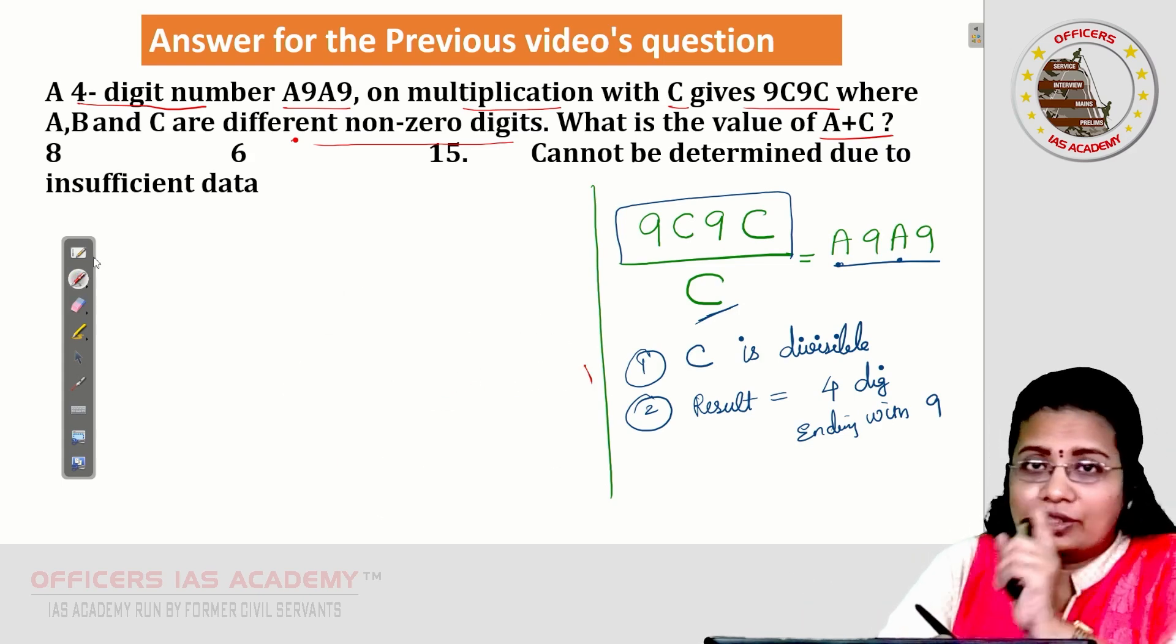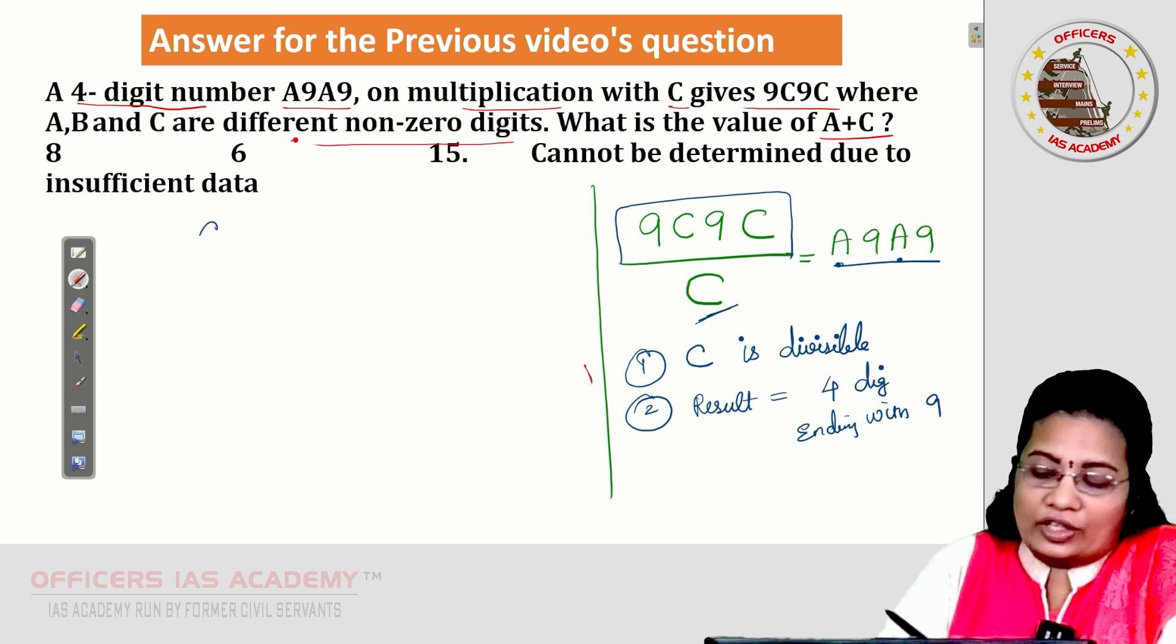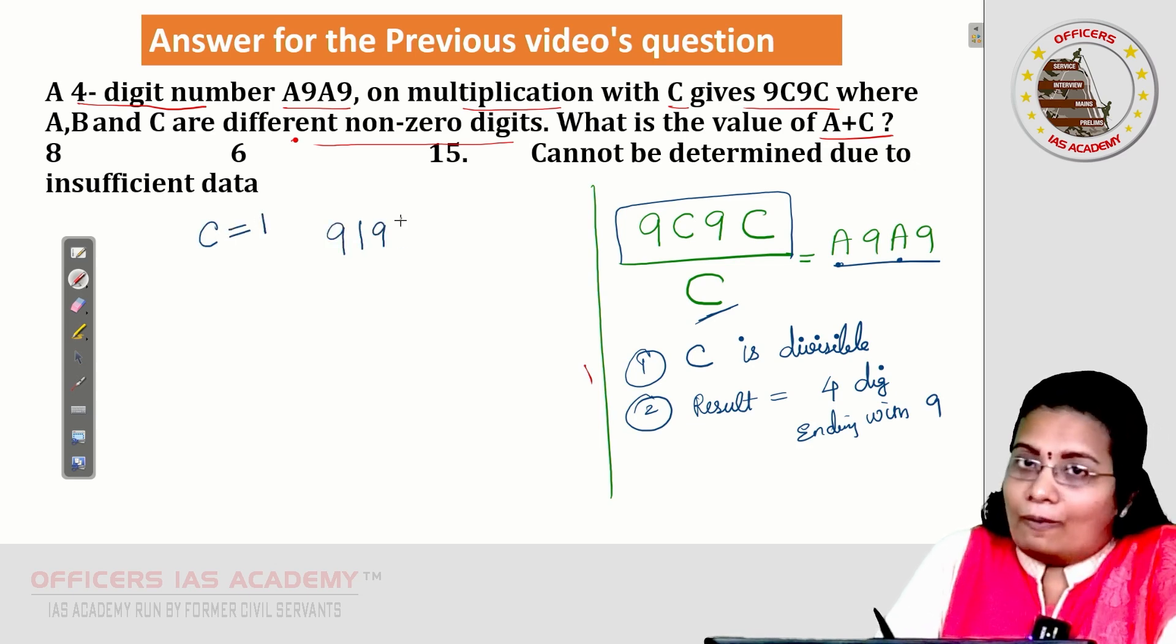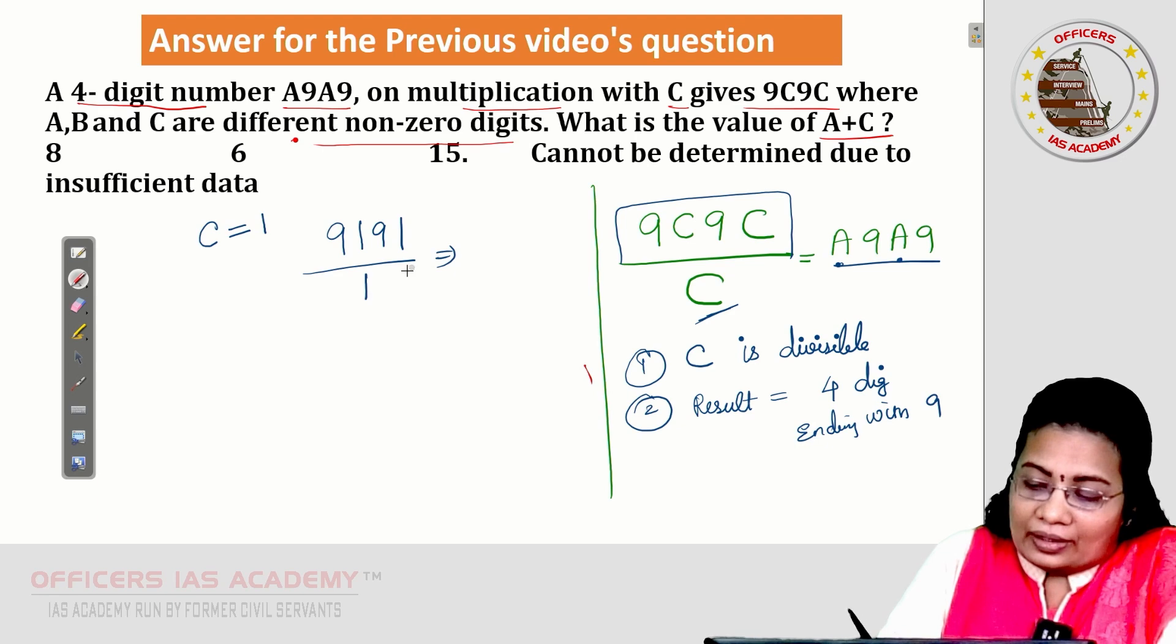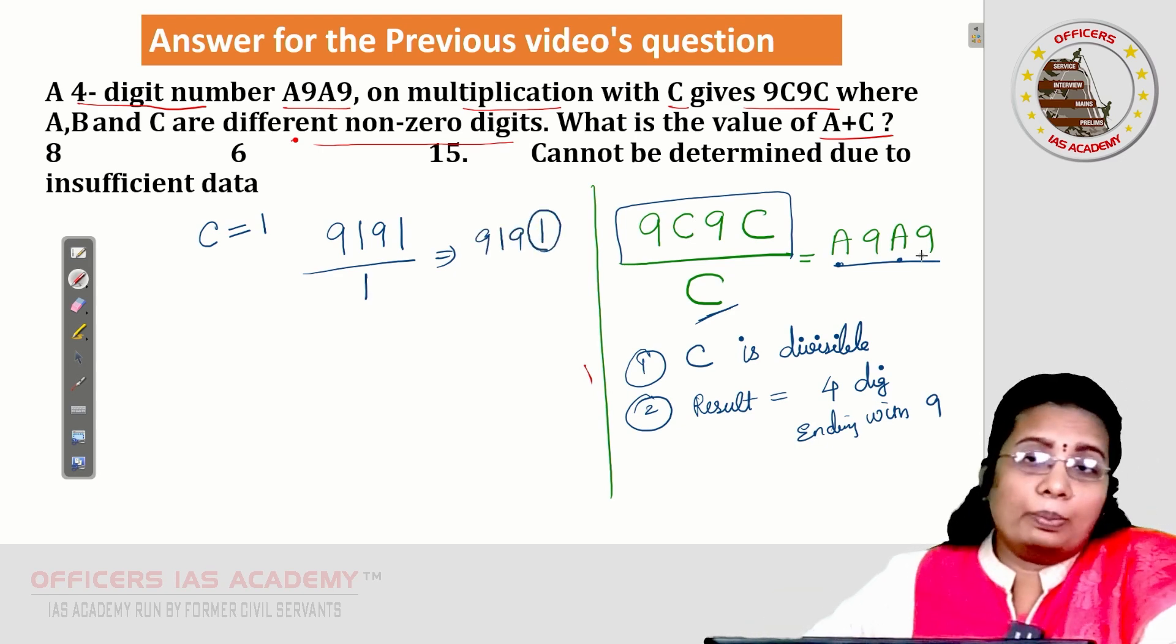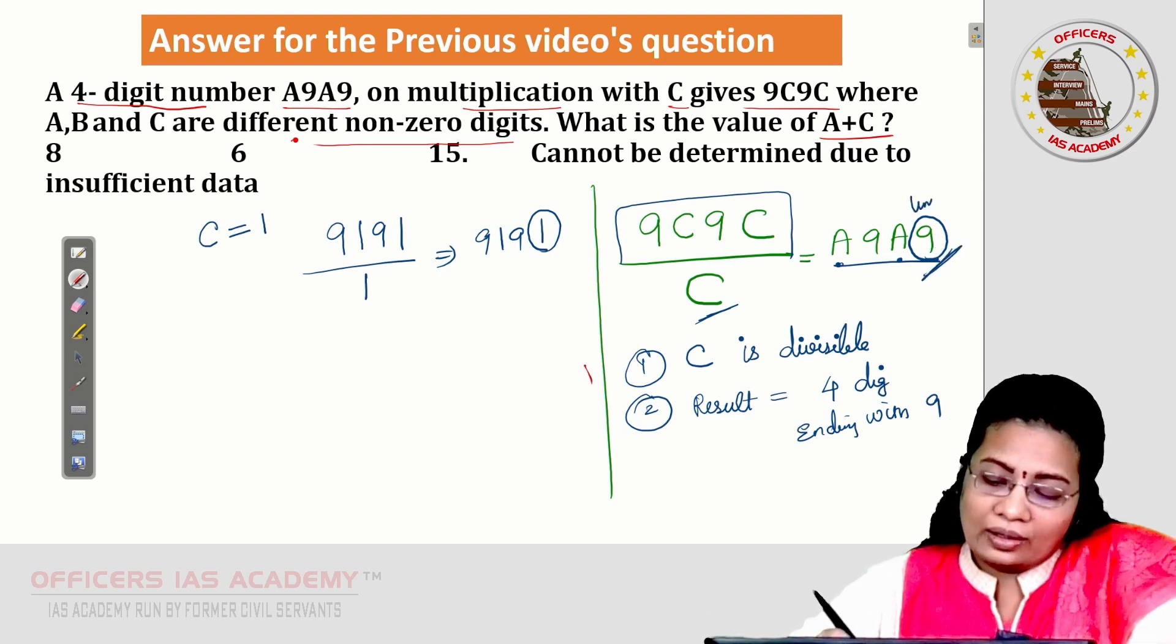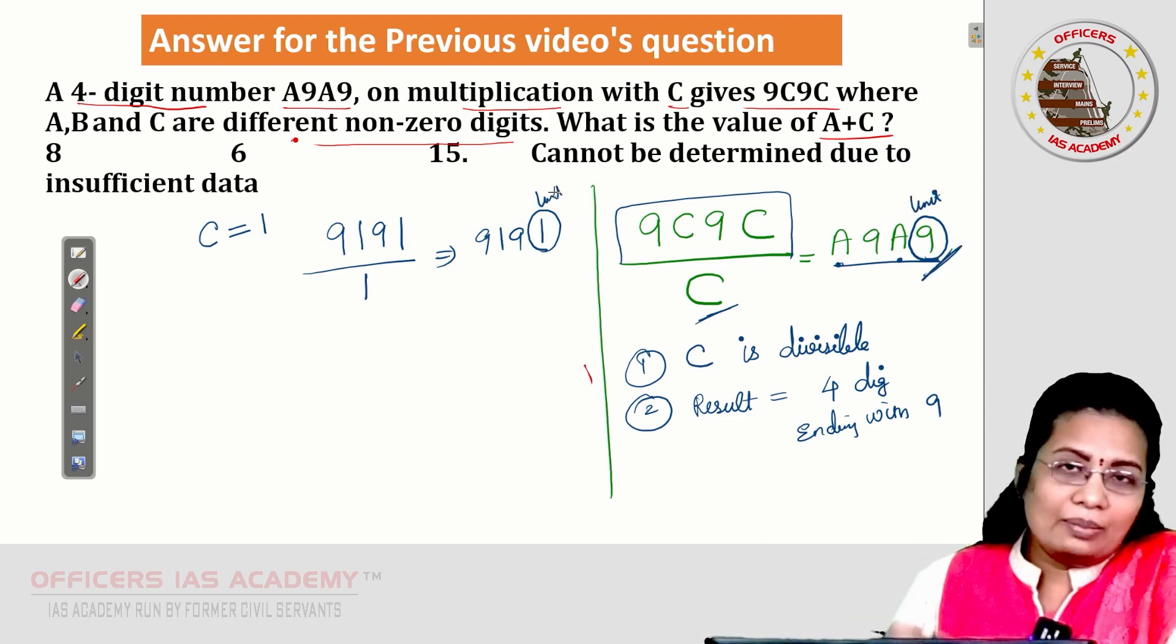Now, let me check according to the condition where it suits. Let me substitute from 1. I am putting C is 1. What happens? Let us see 9191 divided by 1. What is the value I will be getting? 9191. Look at the unit digit. Our focus must be at the unit digit because here unit digit is 9. Here unit digit is 1. So, this one is eliminated.